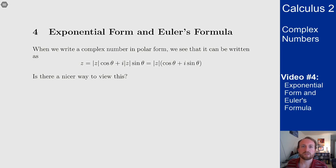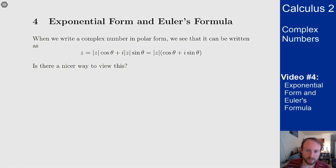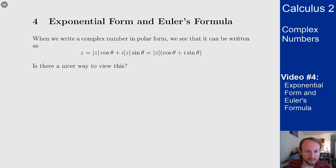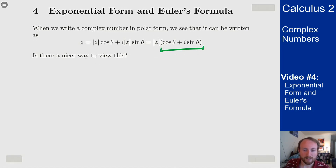In this video we'll talk about the exponential form for complex numbers, which is based on Euler's formula. We saw before that we can write a complex number in polar form: z equals the modulus of z times cosine theta for the x-coordinate plus i sine theta for the y-coordinate. The question is, is there a nicer way to view this setup? It turns out there is, using ideas of Taylor series. I want to take the cosine theta plus i sine theta part and try to write that out using Taylor series.